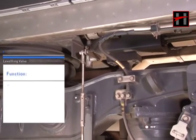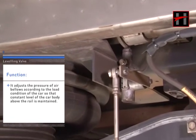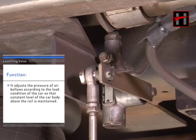The levelling valve adjusts the pressure of the air bellows according to the load condition of the car so that a constant level of the car body above the rail is maintained.